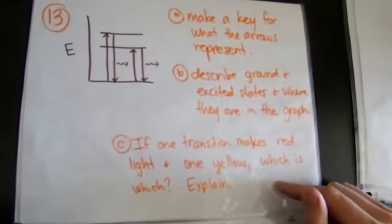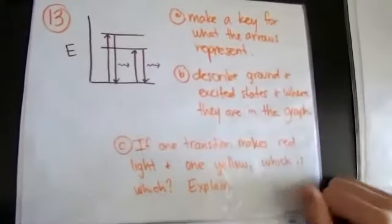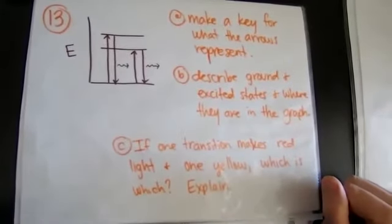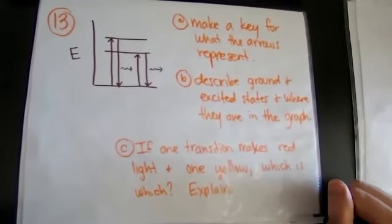In case you can't read part C, if one transition in that diagram makes red light and one yellow, which is which? Explain.